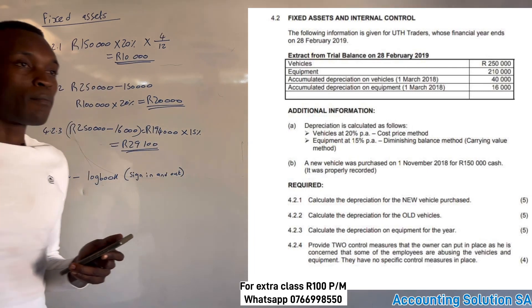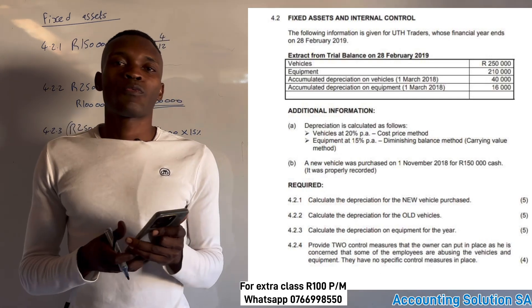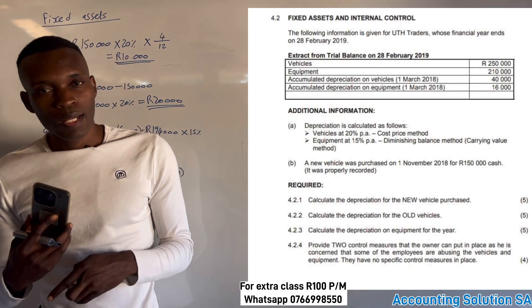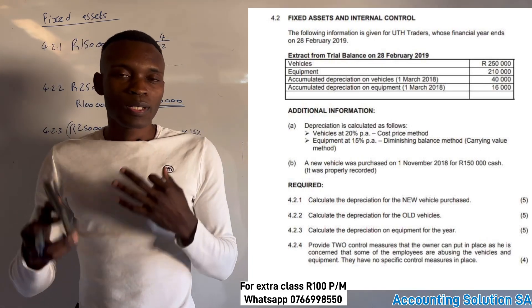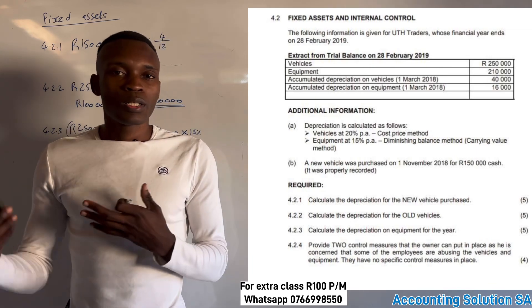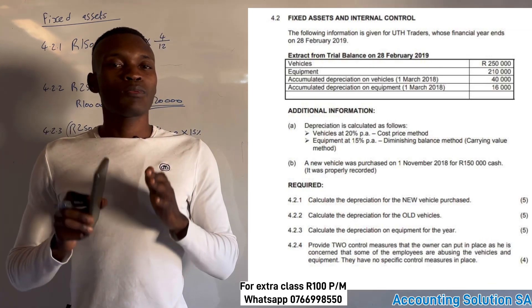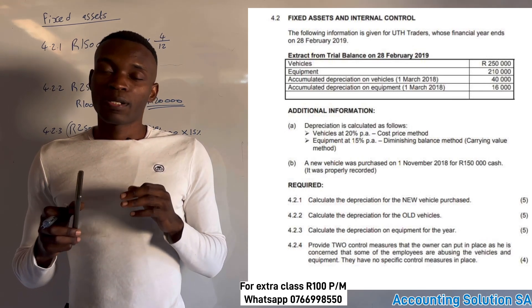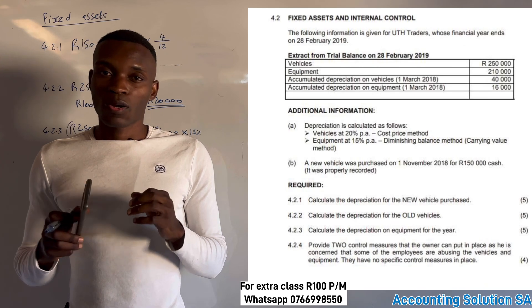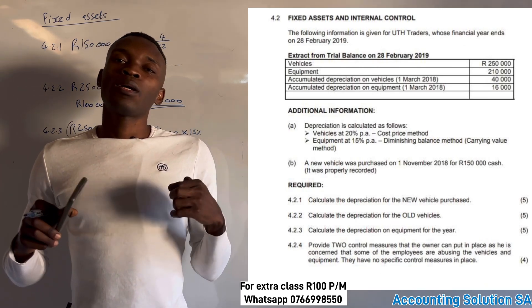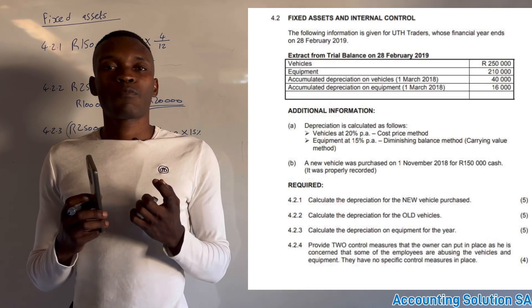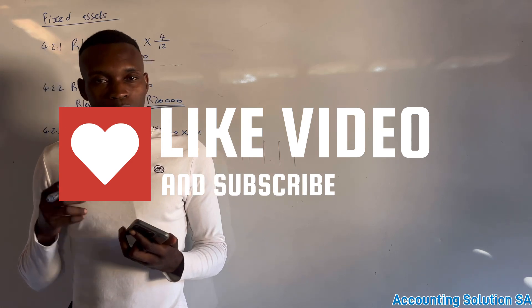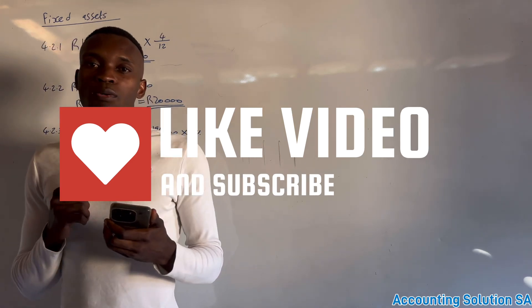If you want to get more questions like this, make sure you purchase our study guide, which includes many questions with solutions. We have a soft copy PDF available for only R100. The printed version costs more than R400, so the PDF is the affordable option. Text us on WhatsApp to get one immediately.